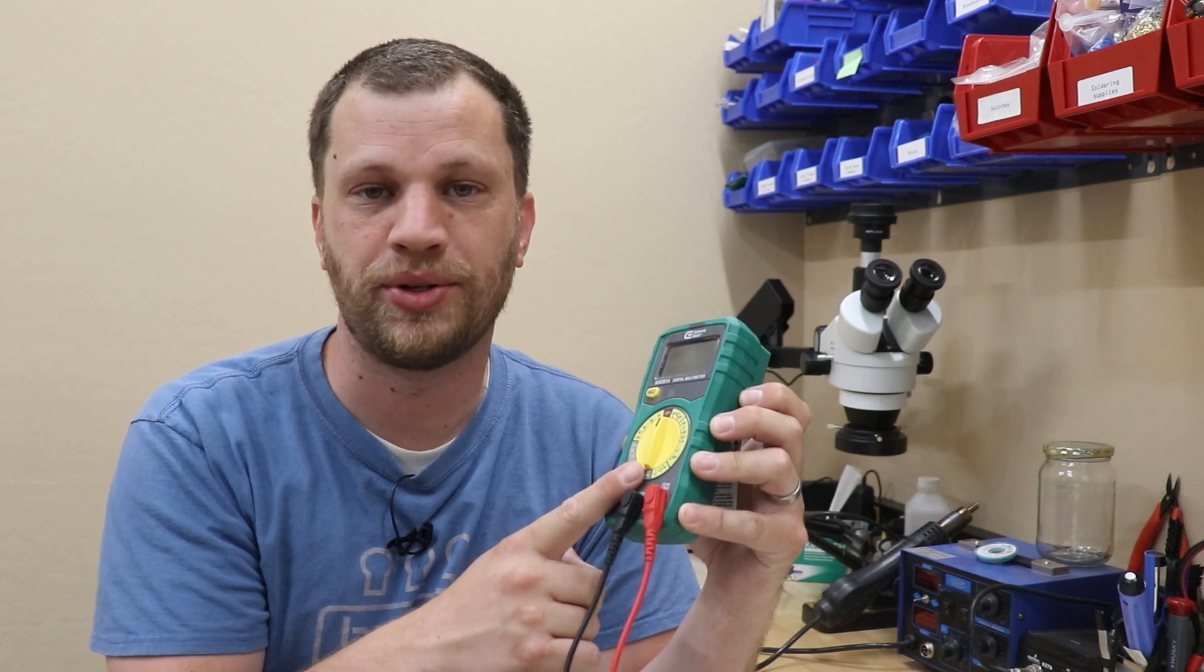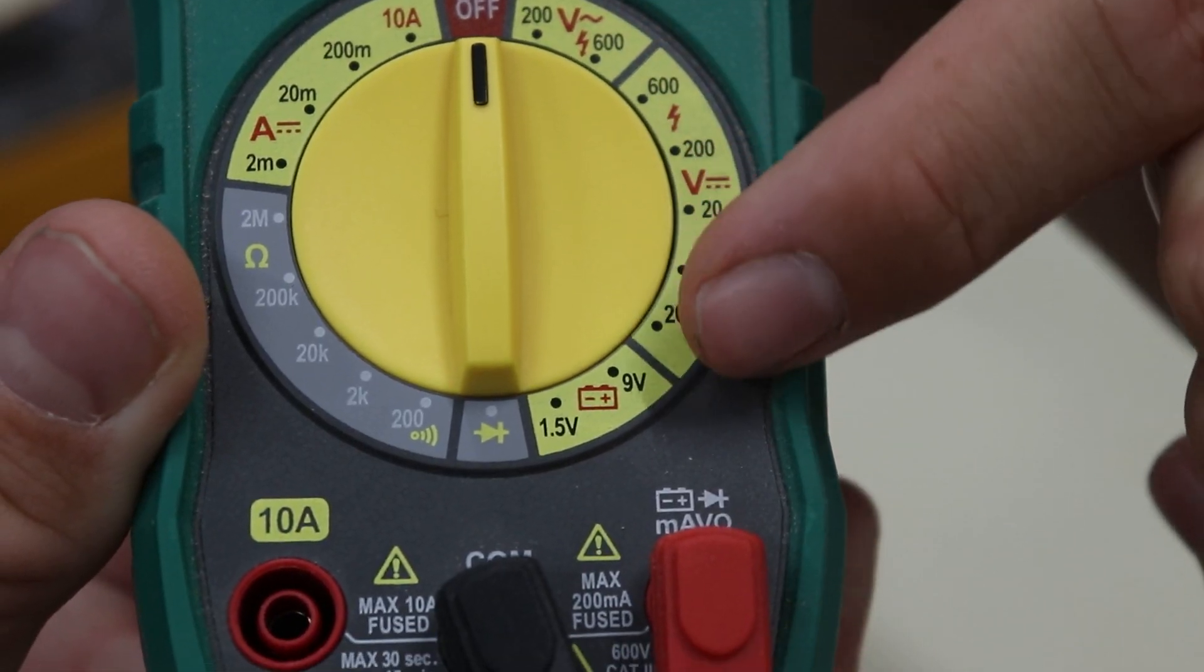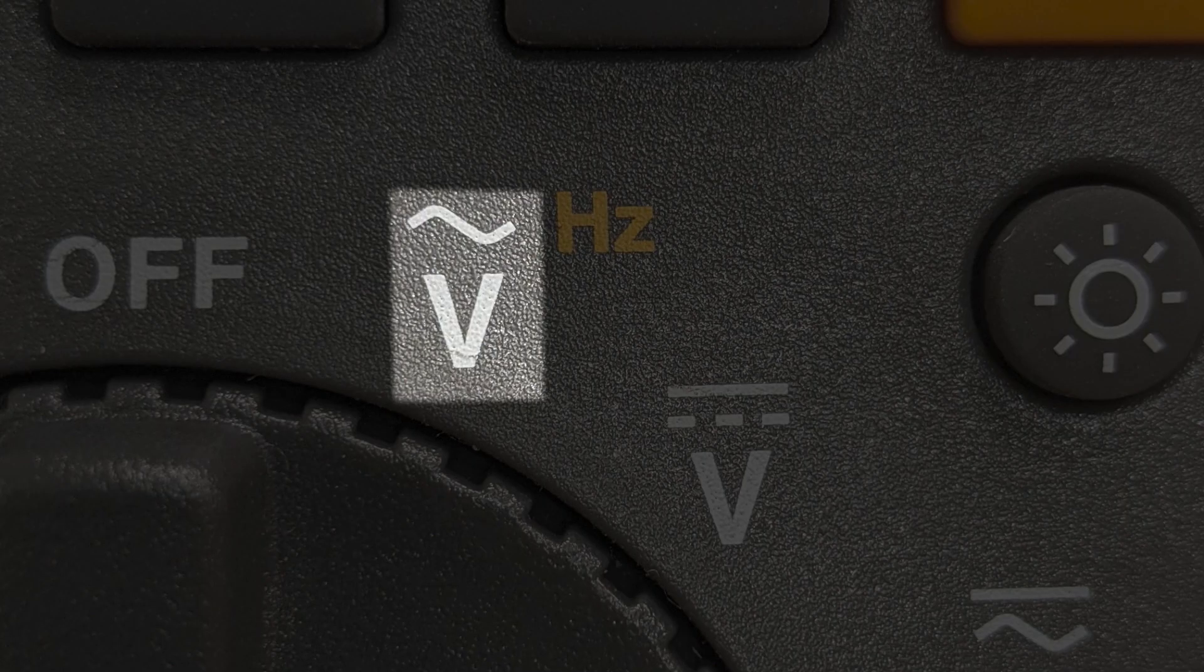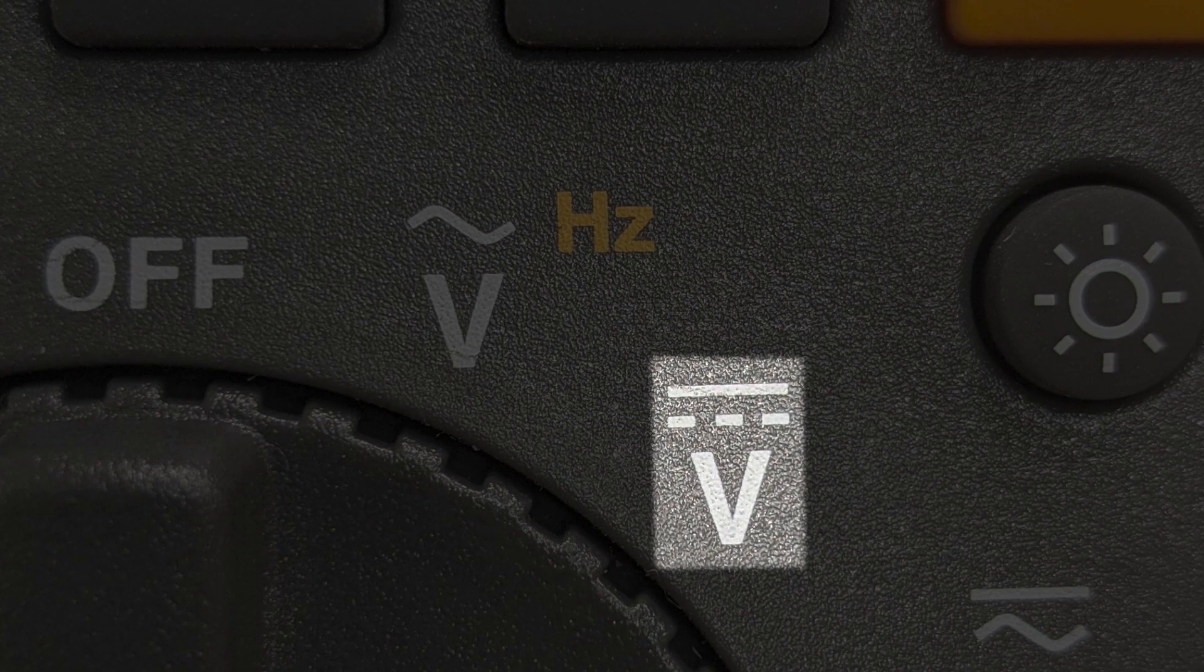If you look at the dial on the multimeter, you'll see that the voltage section is further divided into two sections, one for alternating current and one for direct current. A good example of alternating current is the power that is running through your house. An example of something that is direct current is your car, your boat, or your RV. The symbol for alternating current is a squiggly line. You can remember that because the current is alternating, it's moving up and down. On the other hand, the symbol for direct current is a solid line with three dashes underneath.